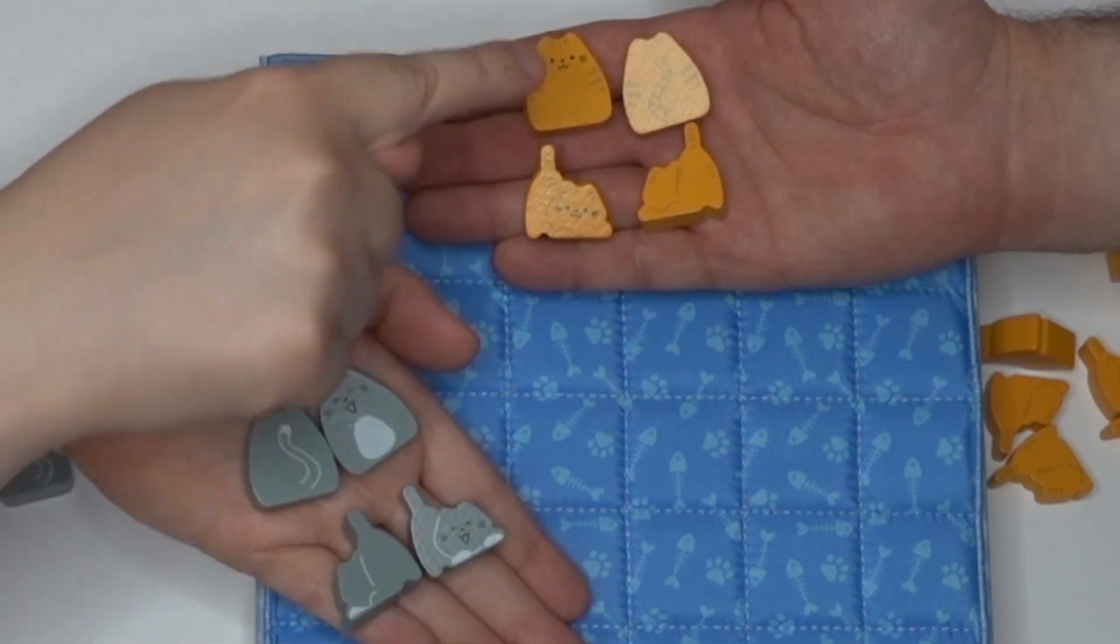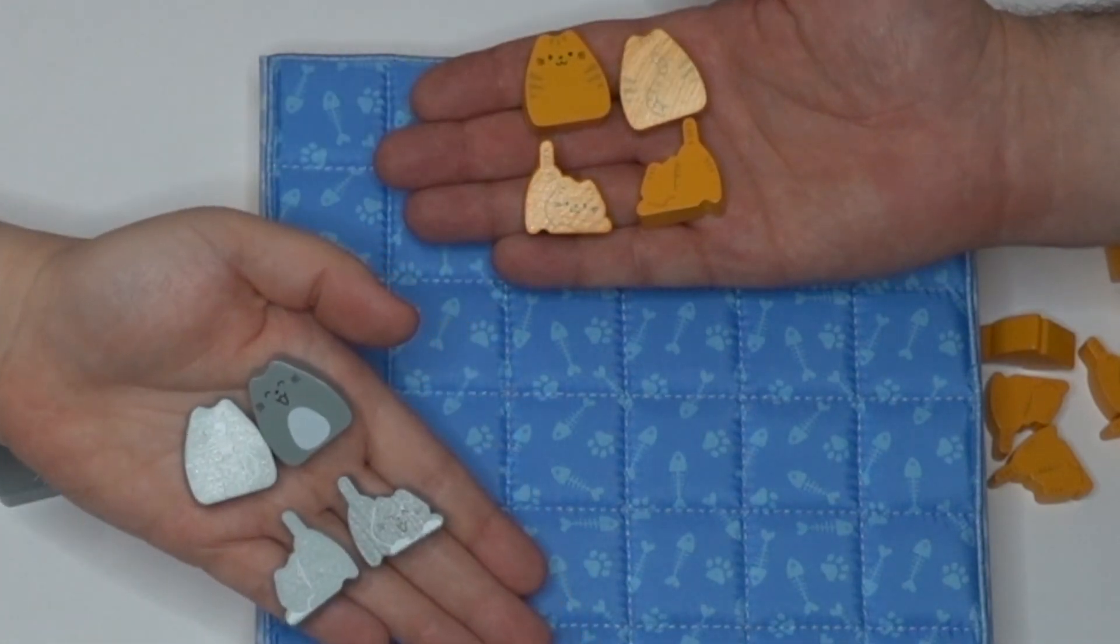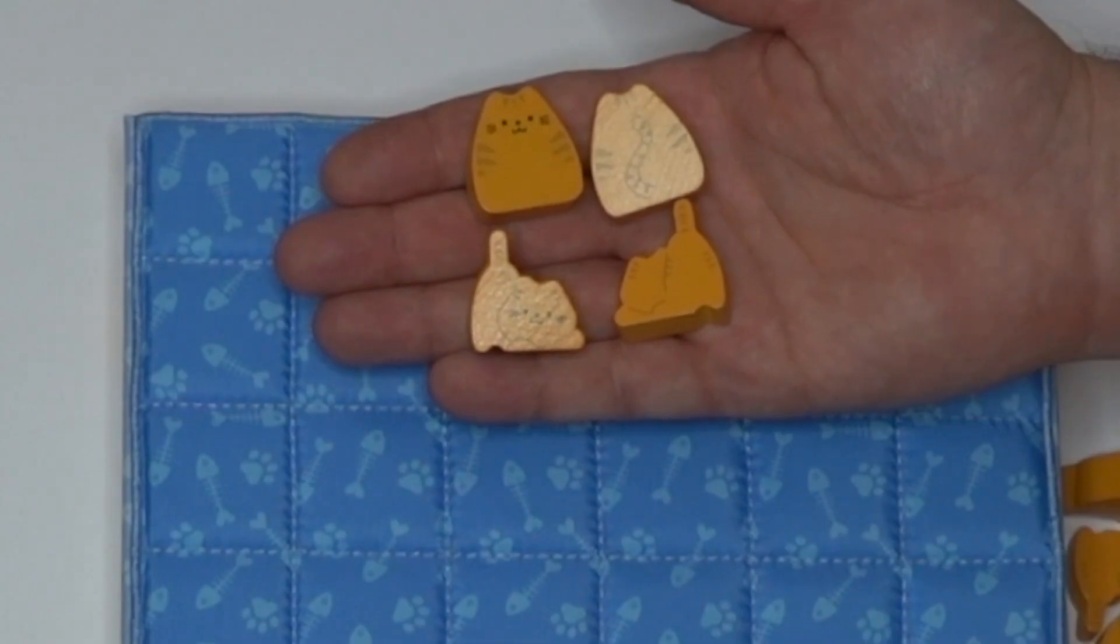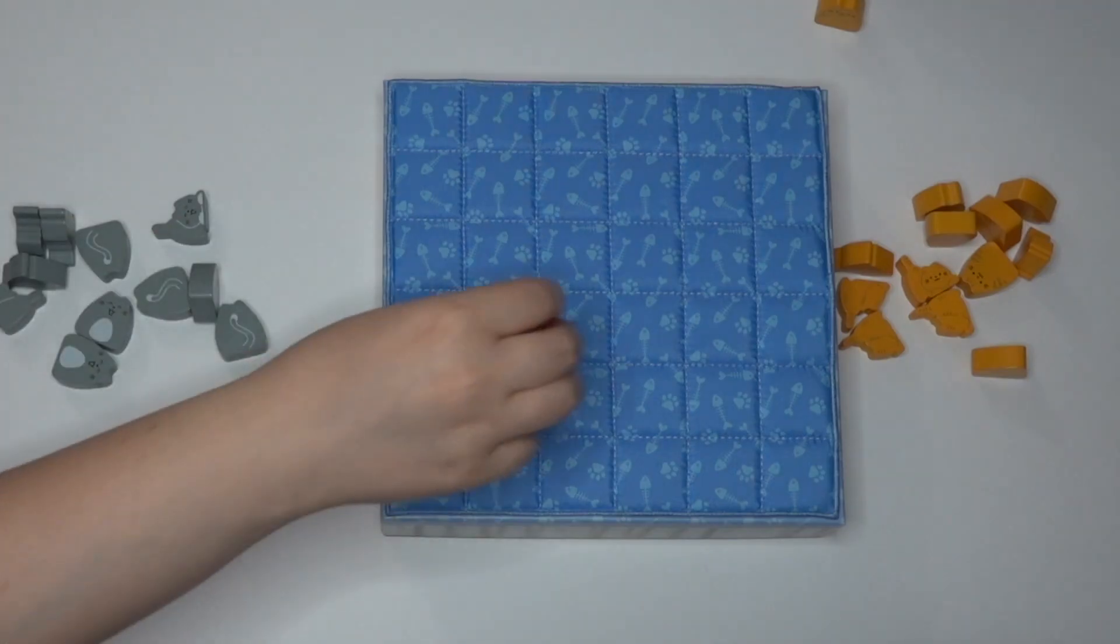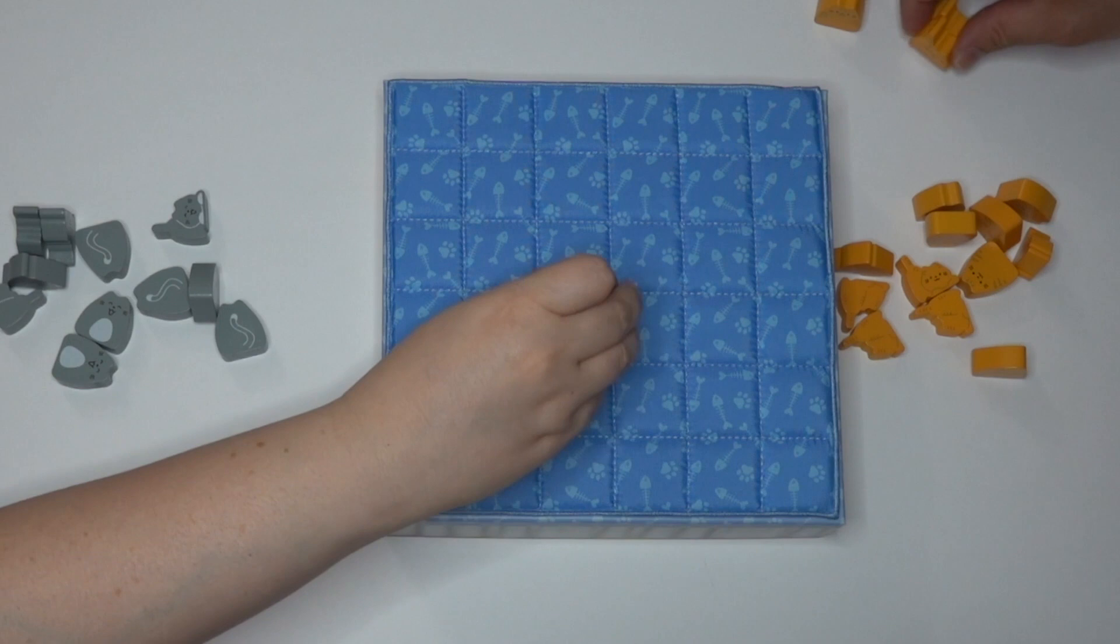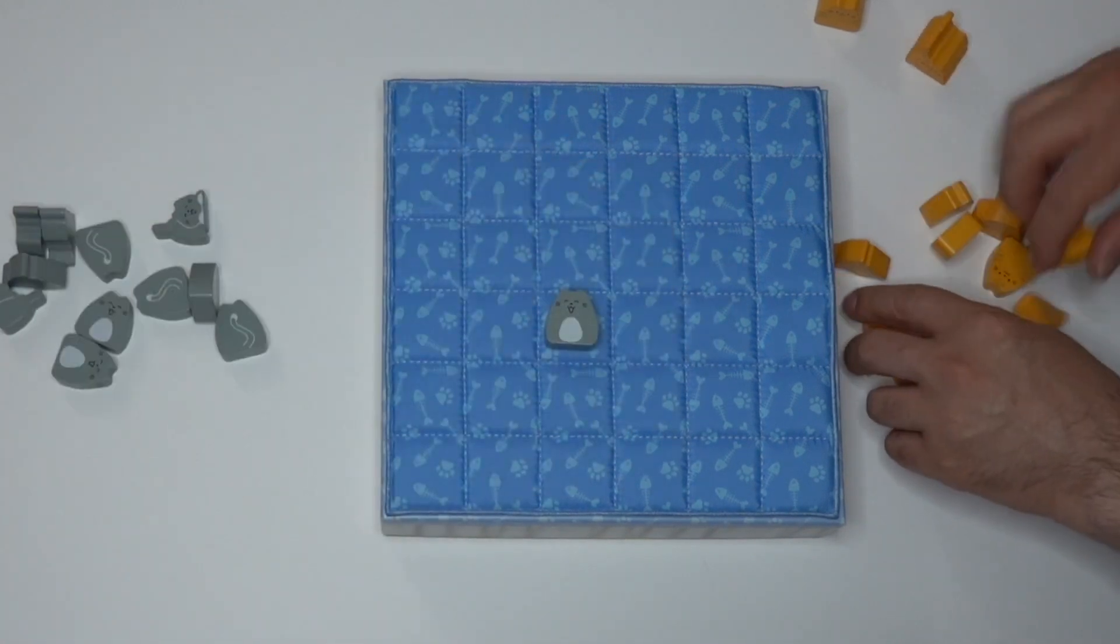And I love that they all have different expressions. They're so cute. Like the gray ones are so happy and the orange ones just look like, what? Now normally you would set your pieces on the board in an upright position, but so you can see it better on camera, we are going to do them tails down.